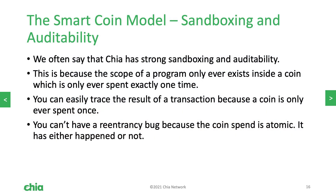Another strength you've probably heard us talk about with Chia is sandboxing and auditability. We often say that Chia has strong sandboxing and auditability. This is because the scope of a program only ever exists inside of a coin, which is only ever spent exactly one time. This makes it easy to trace the results of transactions — you can easily follow where money goes and what happens as a result of a transaction. There's no malleability, no manipulation, it's much more direct. This approach also does not have bugs like reentrancy, because a coin spend is atomic: it has either happened or it has not happened.